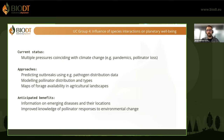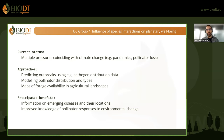The fourth group is about the influence of species interactions on planetary well-being. This is a broad topic involving multiple pressures coinciding with climate change. We want to focus on pathogen distribution and pollinators specifically — predicting outbreaks using pathogen distribution data and modeling pollinator distribution using maps of forage availability in agricultural landscapes. The goal is better information on emerging diseases and improved knowledge of pollinator responses to environmental change.